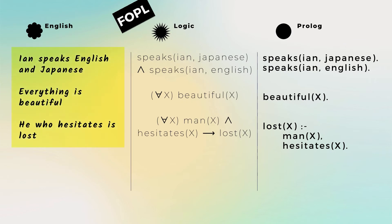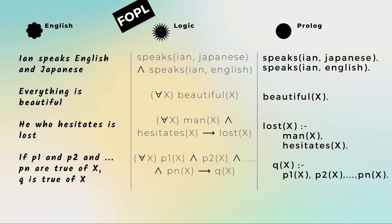Sometimes the natural language counterparts are normal sentences, but sometimes they are sayings. Everything is beautiful. He who hesitates is lost. The bottom line gives you the most general form of a Prolog rule: one non-negated predicate as the head, and on the right, any number of predicates conjoined together by commas.